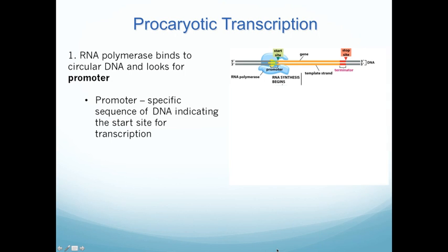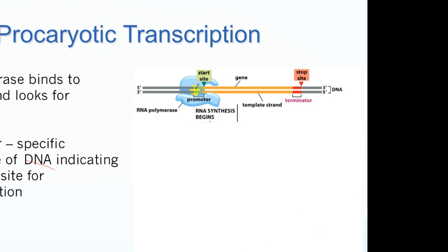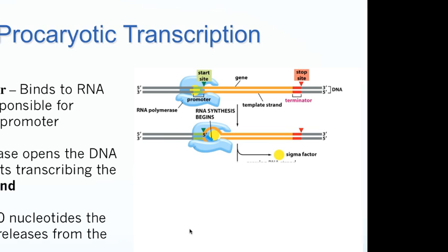So we first look at prokaryotic transcription initiation. The promoter starts initiation — but how does that work? What happens is RNA polymerase will bind to the circular DNA of bacteria and start scanning that chromosome for a promoter. Once it finds a promoter, that's when it can tell it to start transcription. The RNA polymerase binds, scans along, and waits for a promoter to be found.